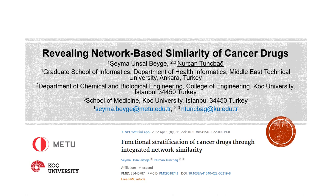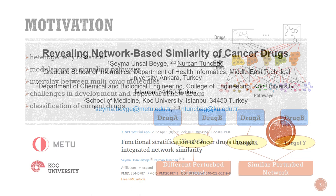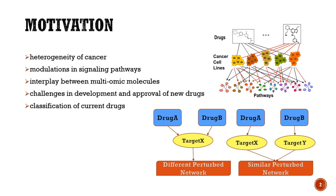In this study, we worked on the similarities and differences of drug modulations on cancer cells by the aid of protein interaction networks. Given the inter- and intra-heterogeneity of cancer, modulations in signaling pathways and the interplay between cellular biomolecules are very important to understand the disease. To repurpose a given drug, we need to know its effect on the other condition, or we need to find another drug candidate that has similar activities with the known one. These factors lead to the main question of how can we classify drugs in a condition-based manner and how can we understand the drug action mechanism.